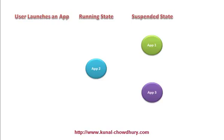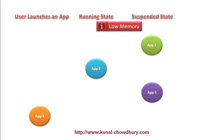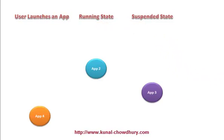Let us consider a situation when you have less memory and your system cannot handle all the suspended applications in the same memory. When the user launches the fourth application and the system does not have sufficient memory, it triggers a low memory notification and the system quickly checks which application is currently in the suspended state and has not been used by the user for a long time. It finds that application 1, which was in the suspended state, was not used for a long time, and terminates it so the fourth application can come to the foreground.